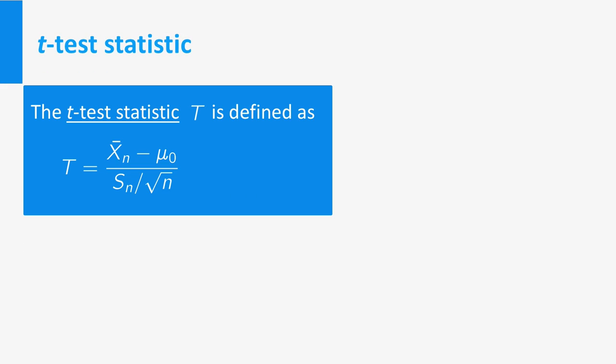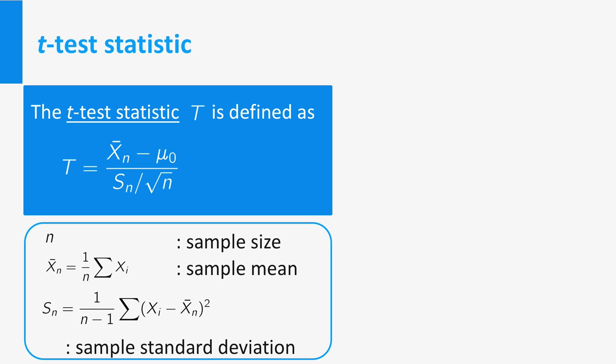First, you see that large values of t provide evidence against the null hypothesis of equal expectations. Moreover, you see it depends on the sample size n, the sample mean xn, and on the sample standard deviation that we called Sn, quantities that you can always compute from the data.